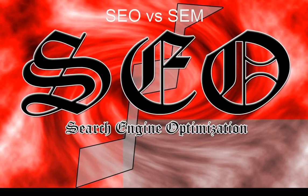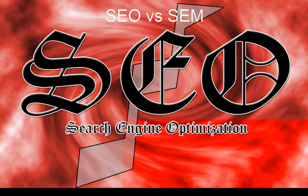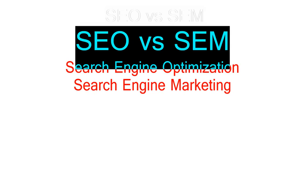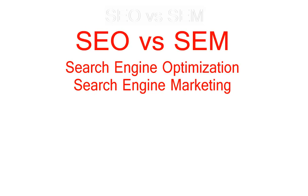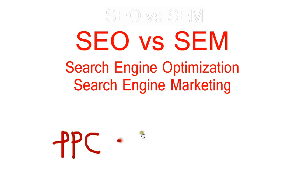If you want to know the difference between SEO and SEM, there is actually a difference between the two. SEO is search engine optimization and SEM is search engine marketing. With search engine optimization, what you're trying to do is achieve really good results naturally within search results. Search engine marketing is an overall encompassing marketing effort on search engines.